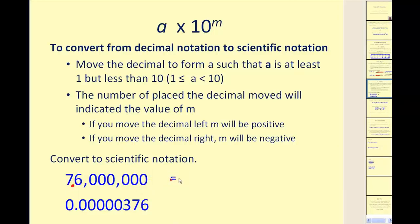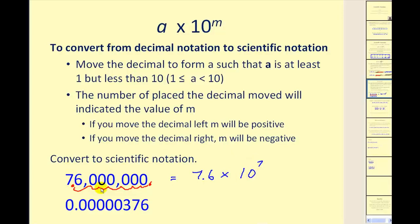In scientific notation this will be 7.6 times some power of 10. Counting the places from where the decimal started to where we want it gives us seven places, so it would be a positive seven. Since this is a rather large number, it makes sense that this exponent would be positive.